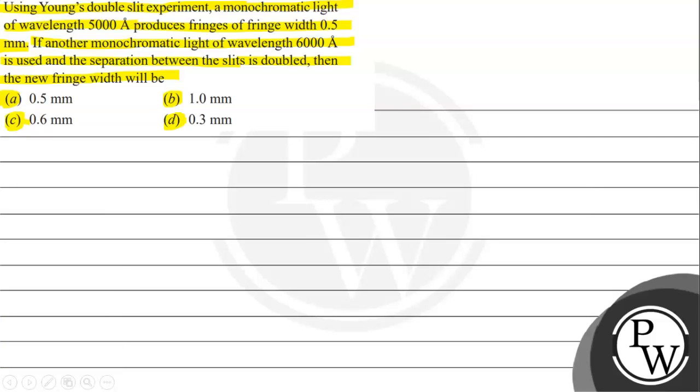To understand this question we need to understand the concept of Young's double slit experiment, we abbreviate it as YDSE. Let's suppose we have a general setup here. These are the two slits S1 and S2. This is the screen at a distance capital D from the slits and separation between the two slits is denoted with small d.